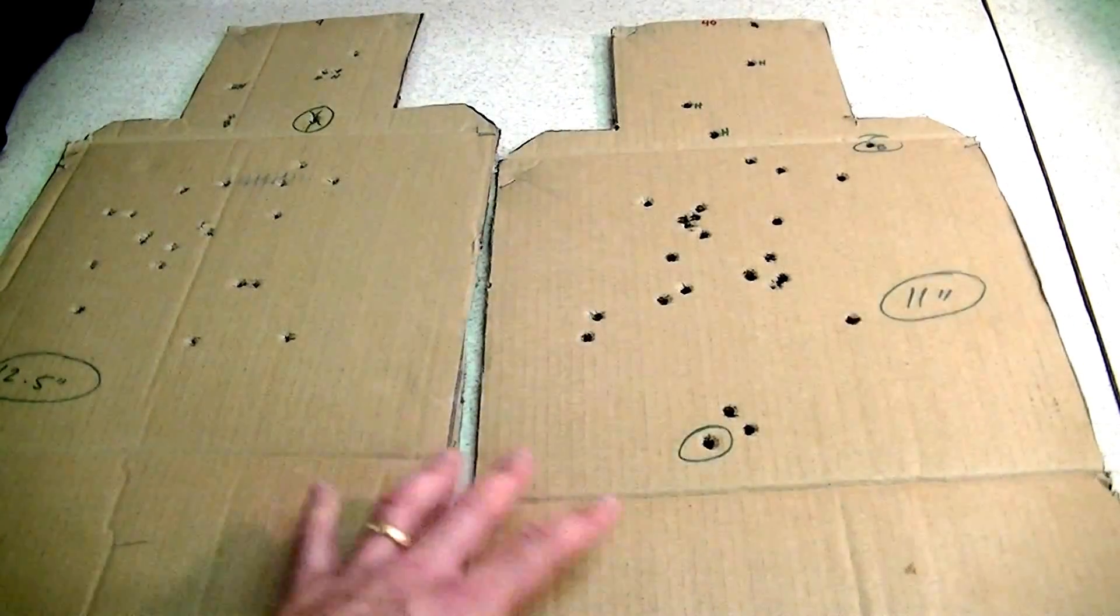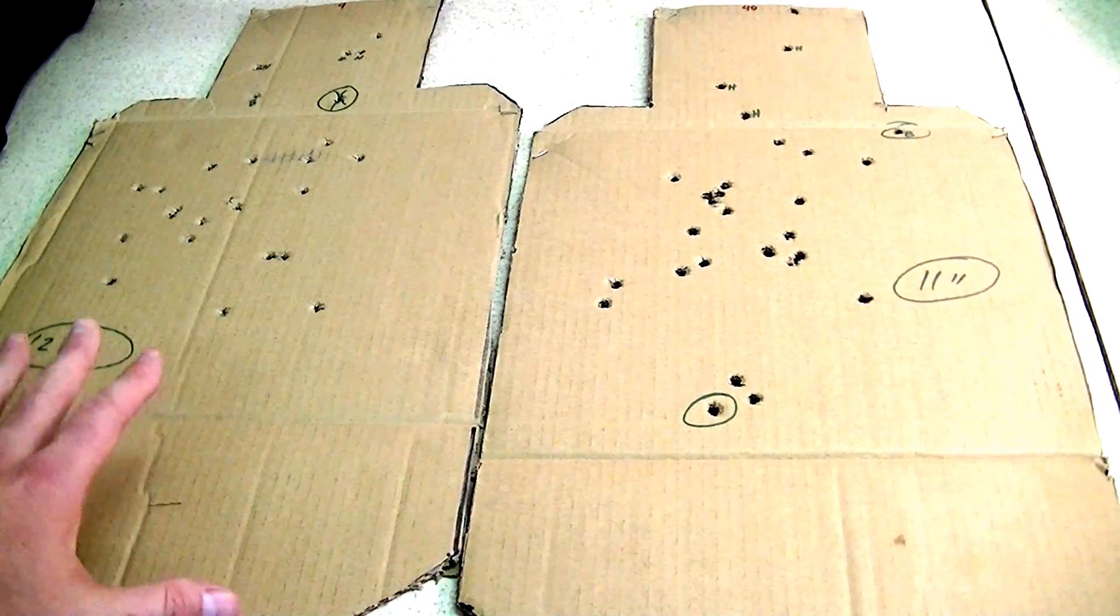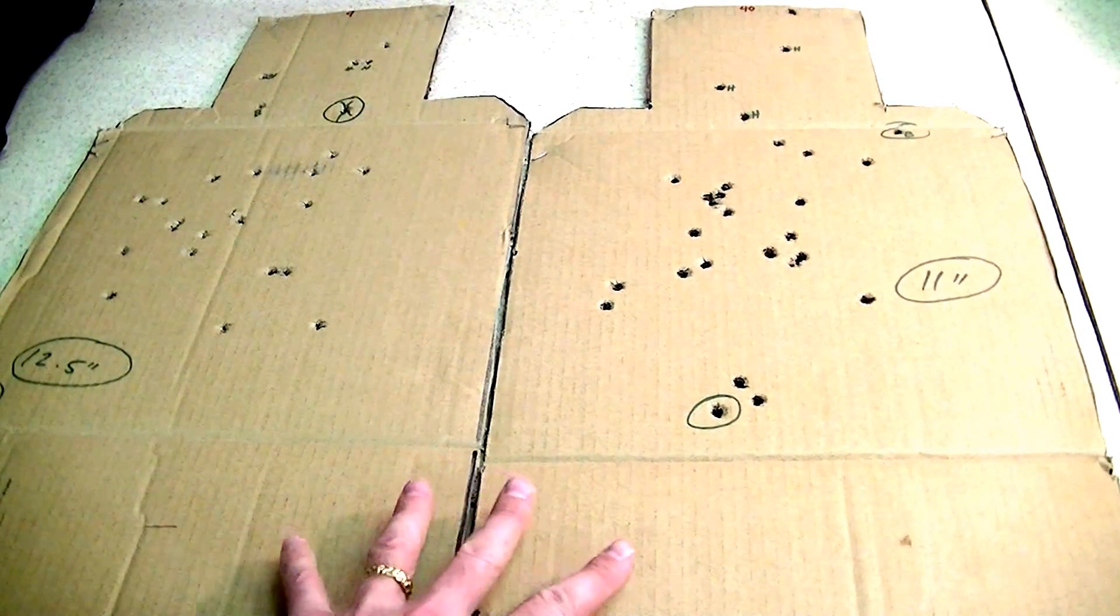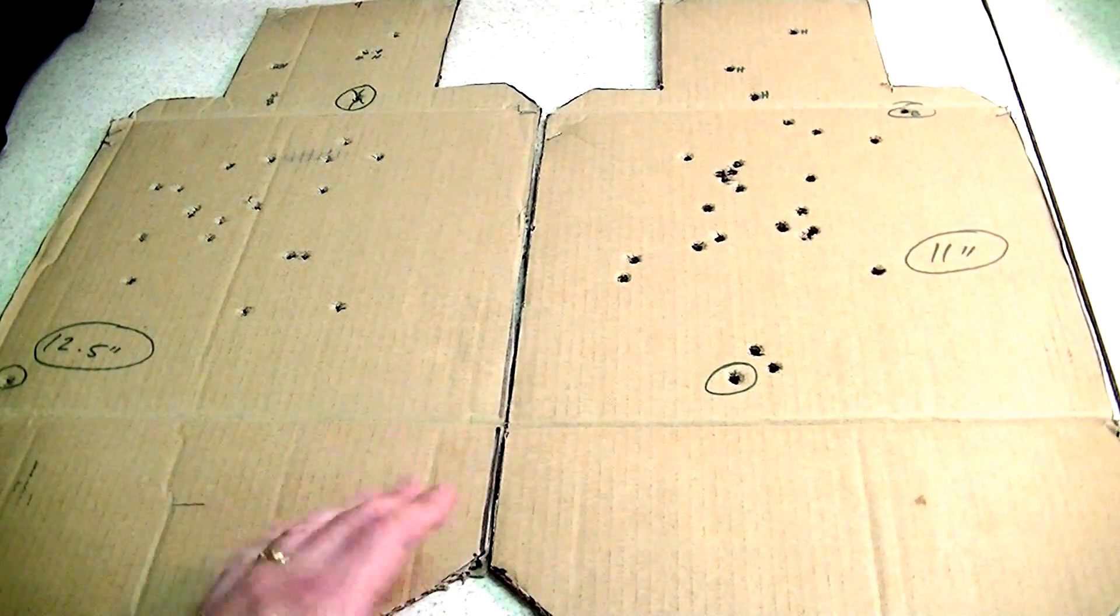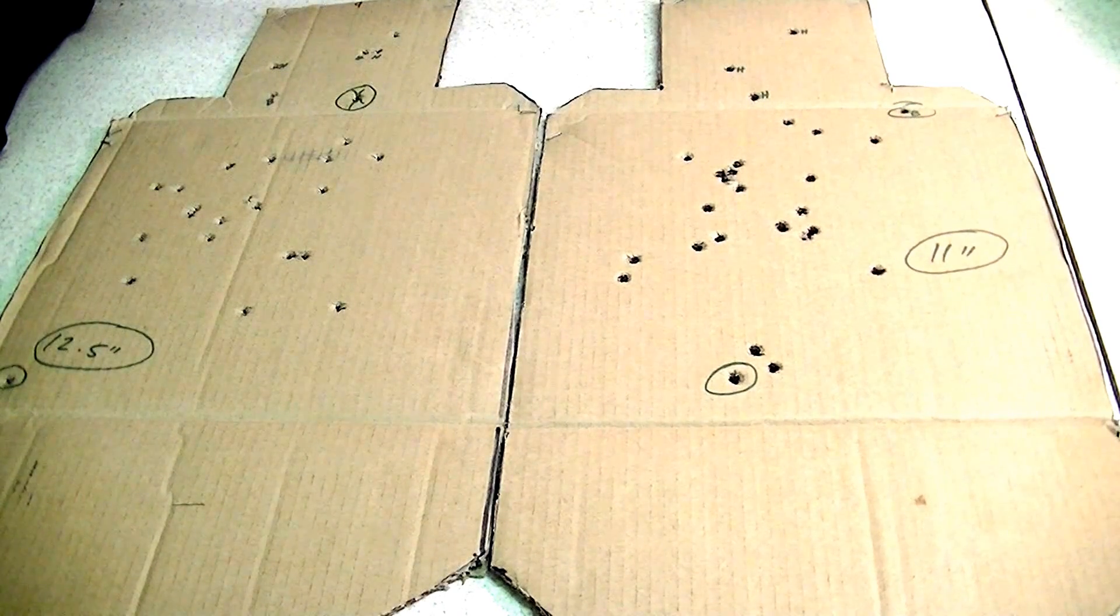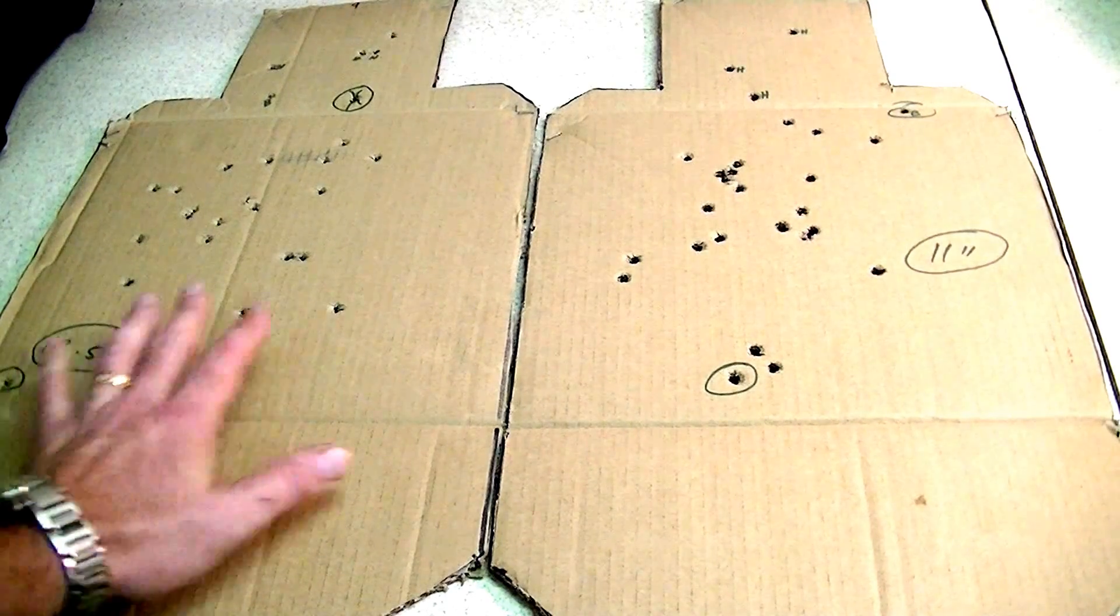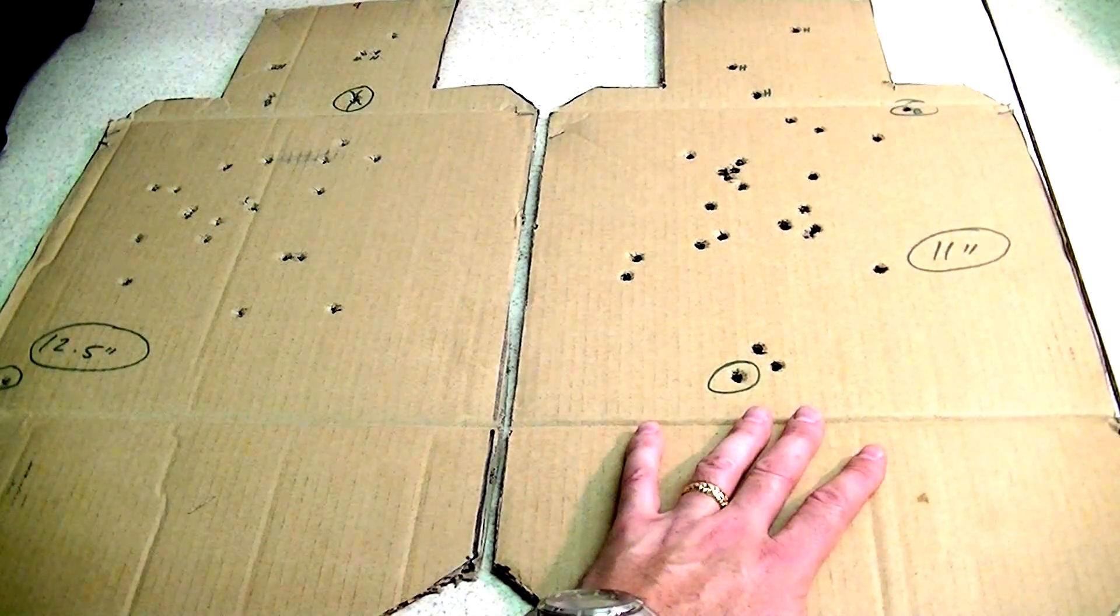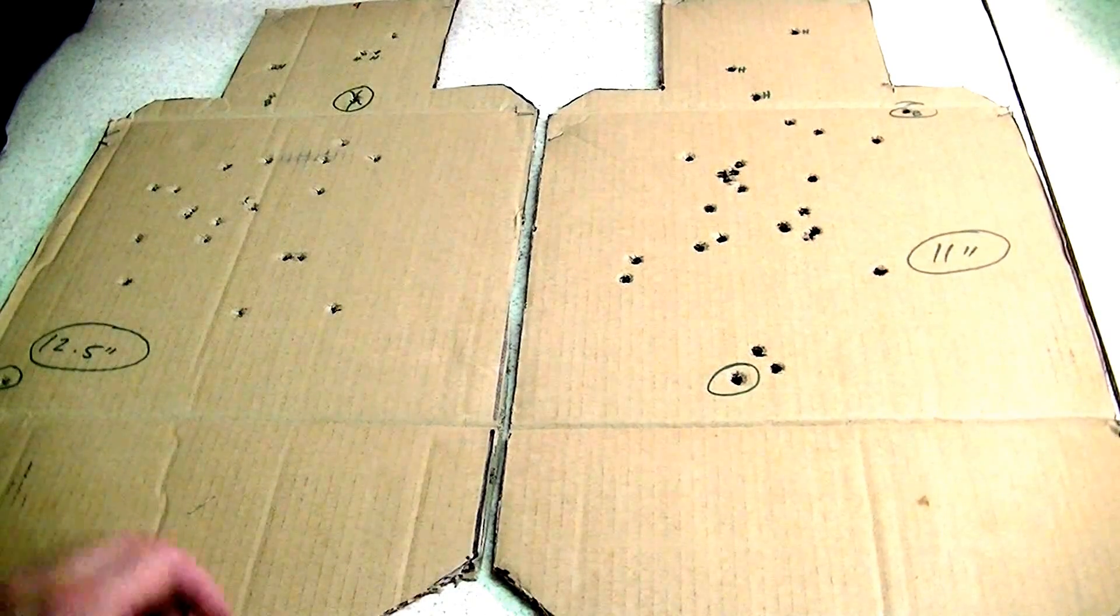Now, the big reveal. The eleven inch side and the twelve and a half inch side. If you had to guess which caliber is which. I went to my brother-in-law's and I borrowed his M&P 40 shield. This was shot with my nine shield. This was shot with the 40 shield. I ended up with an inch and a half better group with the 40 than I did the nine.